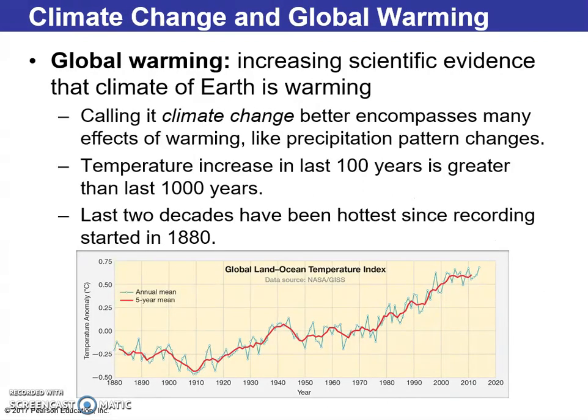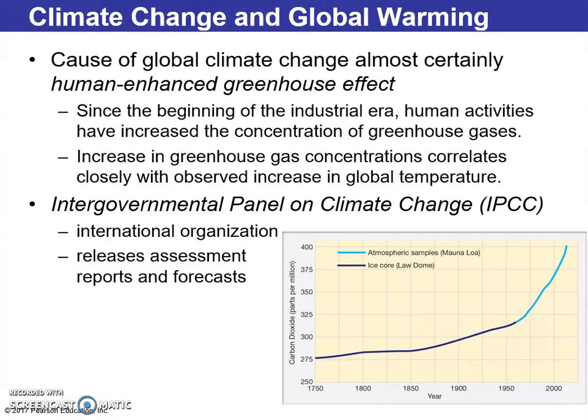Moving into our climate topics, global warming is supported by scientific evidence showing the earth is warming. Historically the earth has been cycling through cooling and warming periods, as seen in ice cores especially from Antarctica. A lot of recent warming has been attributed to the human-enhanced greenhouse effect. Political and scientific organizations addressing this include the Kyoto Protocol and the Intergovernmental Panel on Climate Change.